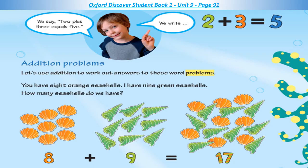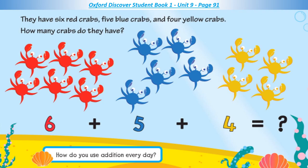Addition. Let's use addition to work out answers to these word problems. You have eight orange seashells. I have nine green seashells. How many seashells do we have? Eight plus nine equals? They have six red crabs, five blue crabs, and four yellow crabs. How many crabs do they have? Six plus five plus four equals? How do you use addition every day?